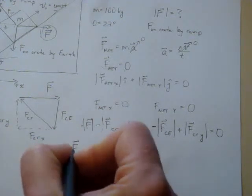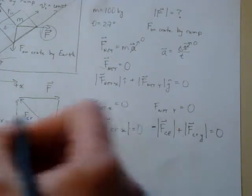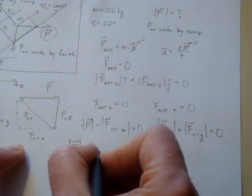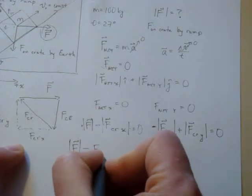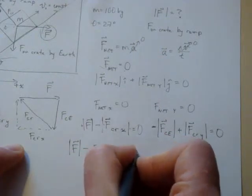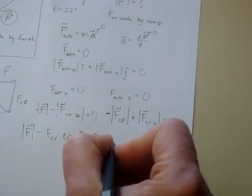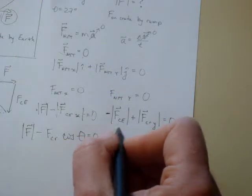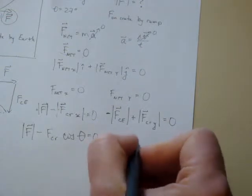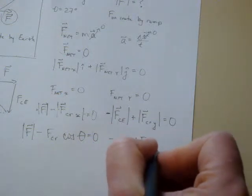Plugging in those quantities: we have the force F we're trying to find, minus the x component of the force on the crate by the ramp — which is FcR times sine of θ — equal to zero. And we also have minus the force on the crate by the earth, which is mass times gravitational acceleration, plus the y component FcR times cosine of θ.